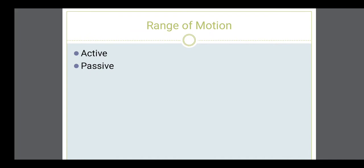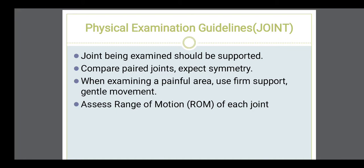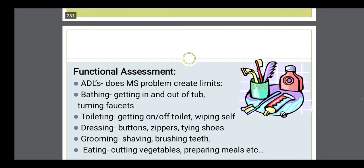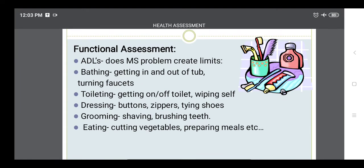The range of motion is important — active and passive. Active means if the patient is able to do it by himself; passive is when you are helping the patient. When examining a painful joint, use firm support and gentle movement. Range of motion for all joints has to be assessed. When doing a range of motion test, also assess for activities of daily living — toileting, dressing, grooming, bathing — which can be affected if the range of motion of the joint is limited.